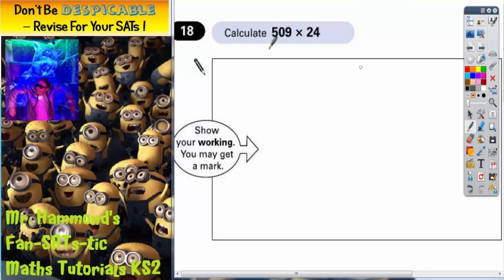Question number 18. Calculate 509 times by 24. Now because we're multiplying by a number bigger than 10, this is the sort of calculation that we usually refer to as long multiplication.